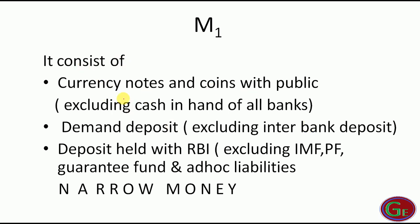M1 consists of currency notes and coins with the public, excluding cash in hand of all banks. Second, demand deposits — interbank deposits are excluded. Third, deposits held with the RBI.